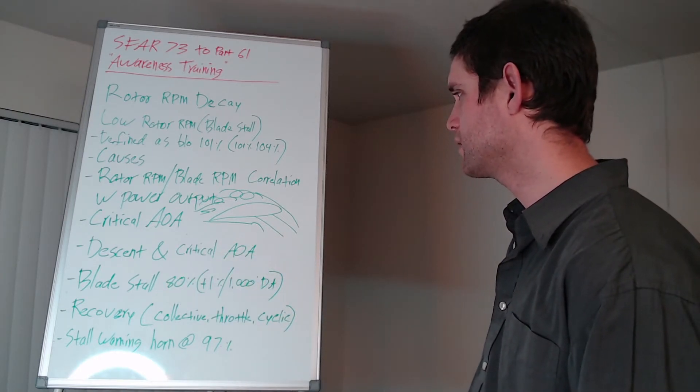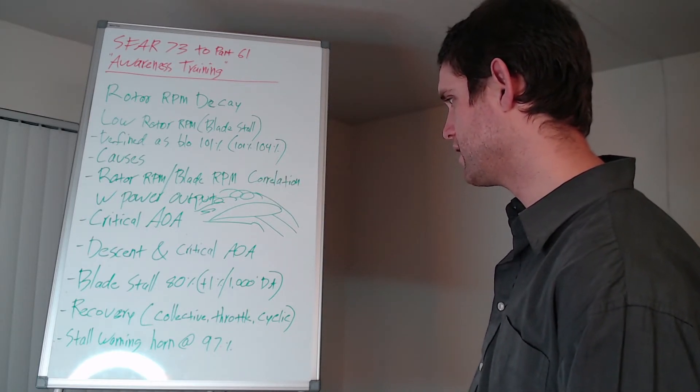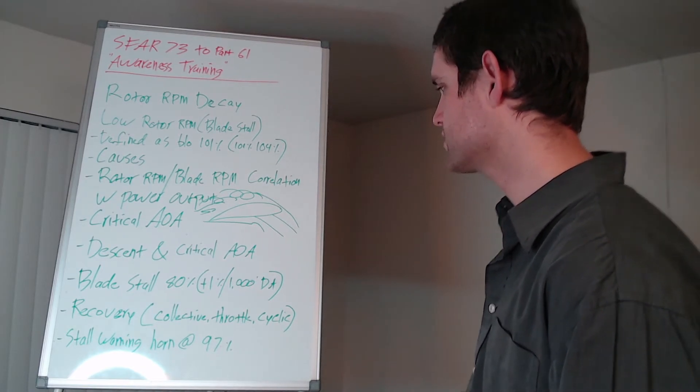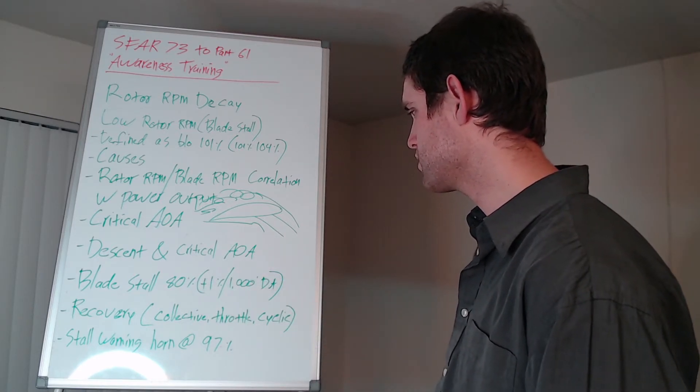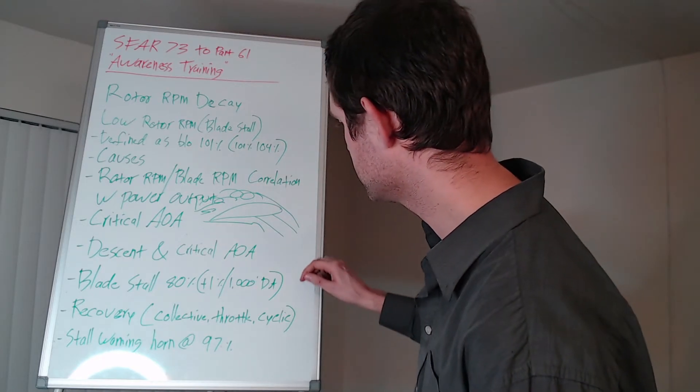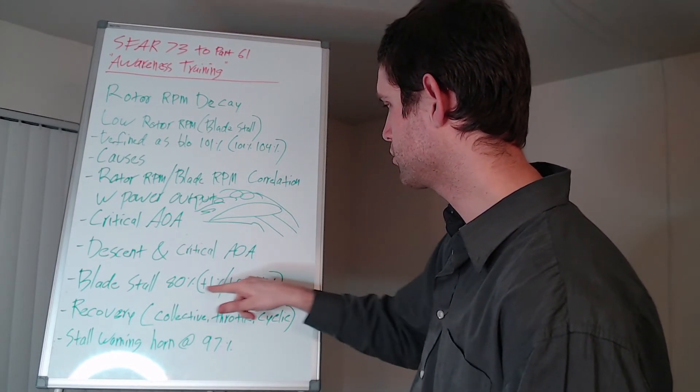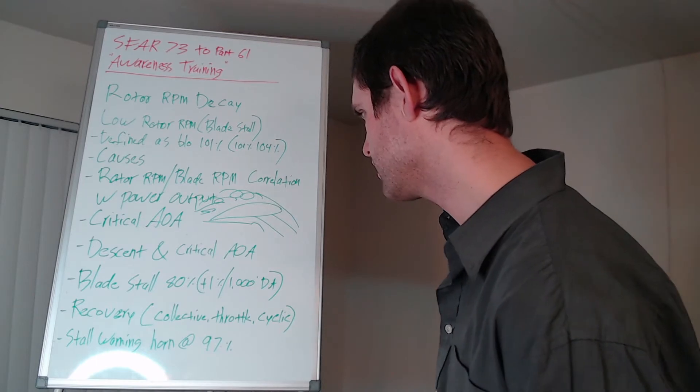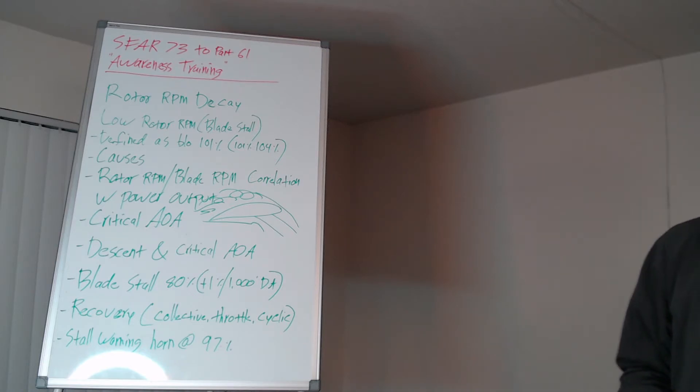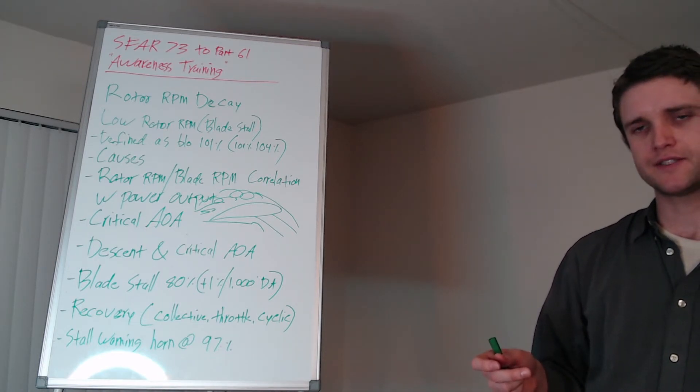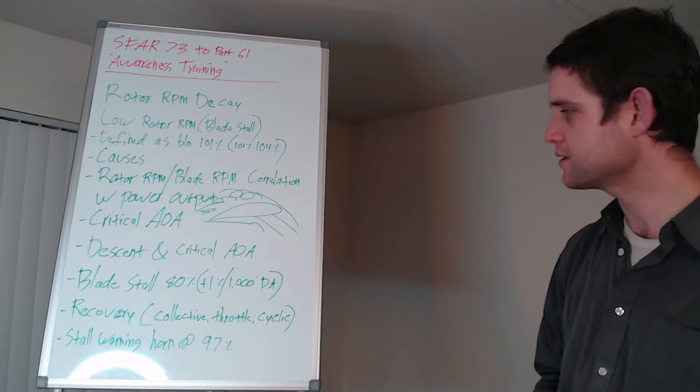Blade stall will stall at about 80% RPM, 80% rotor RPM at sea level, and that will actually increase by approximately 1% per 1,000-foot increase in altitude. If you climbed up another 5,000 feet above sea level, your rotor blades would actually stall at 85% indicated. The recovery for low rotor RPM is actually to apply gentle aft cyclic, lower collective, and gently roll on throttle, doing all three of those simultaneously.